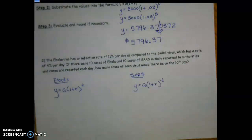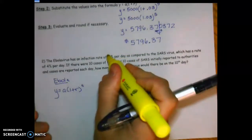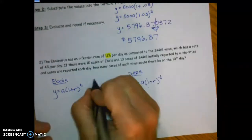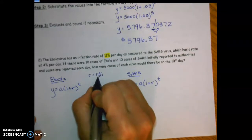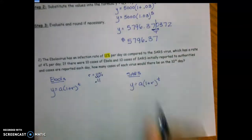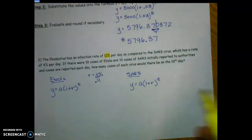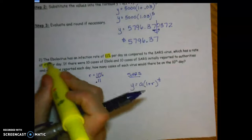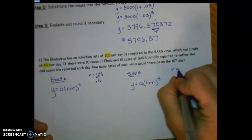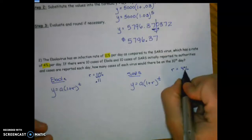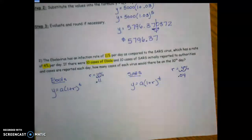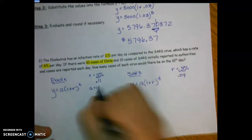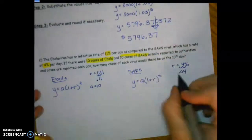For Ebola: the infection rate is 11% per day, so convert to decimal — move two places — r = 0.11. For SARS: 4% per day, convert to r = 0.04. Both had 10 initial cases, so a = 10 for both. We want cases on the 10th day, so t = 10 for both.